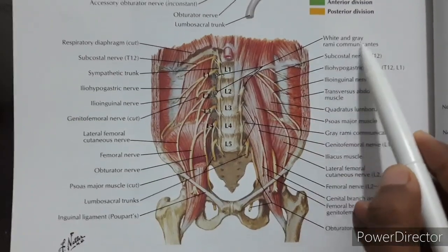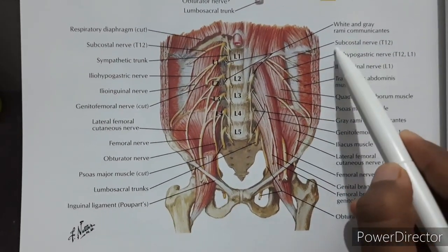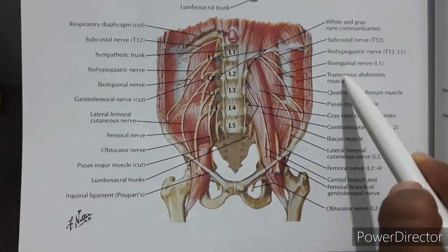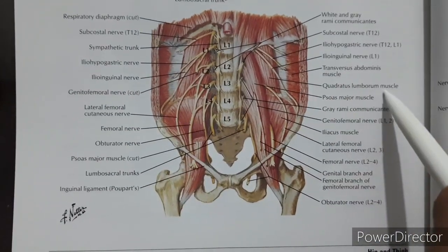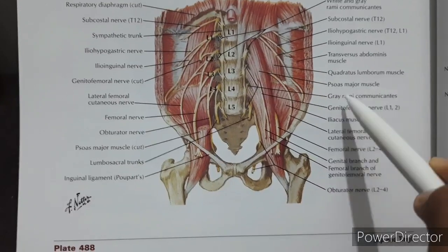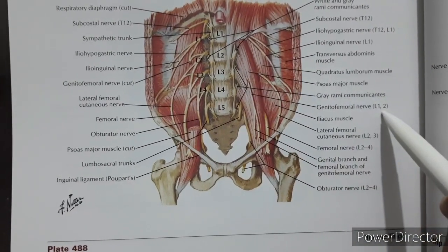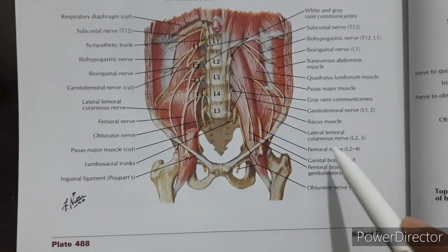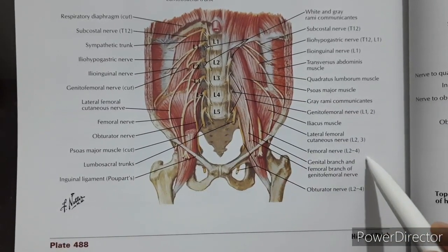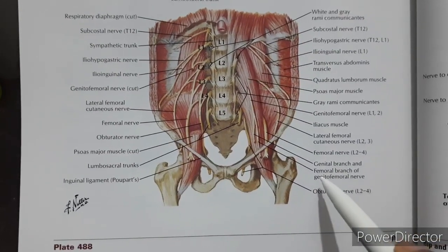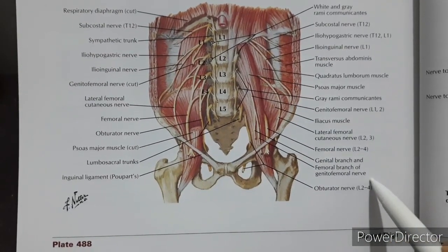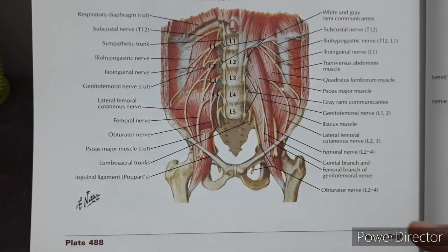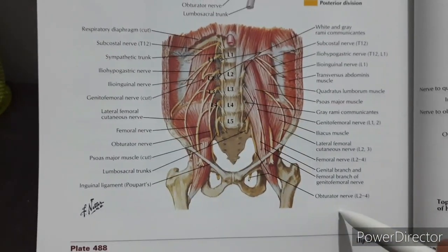Now let's look at the white and gray rami communicantes diagram. The subcostal nerve is T12, the iliohypogastric nerve is T12-L1, the ilioinguinal nerve is L1. Structures shown include the transverse abdominis muscle, quadratus lumborum, and psoas major. The genitofemoral nerve root value is L1 and L2, the lateral femoral cutaneous nerve is L2 and L3, the femoral nerve is L2-L4 (dorsal division), and the obturator nerve is L2-L4 (ventral division).